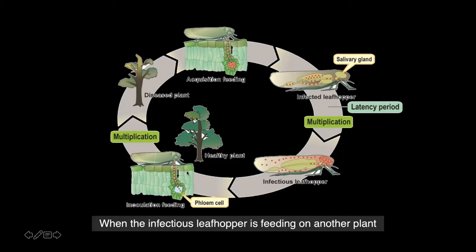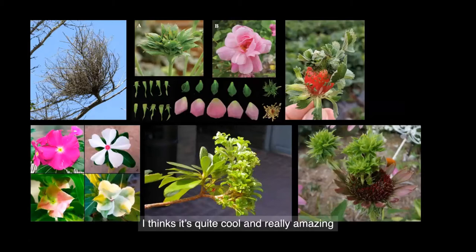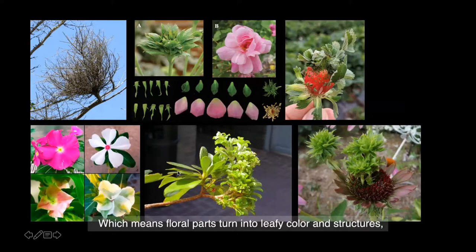Here are some examples of phytoplasma-induced symptoms. I think it's quite cool and really amazing. You can see witch's broom, different levels of phyllody and virescence — which means floral parts turn into leafy color and structures — and excessive shoot growth.